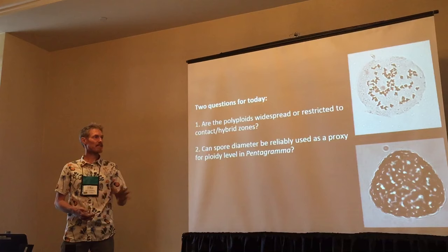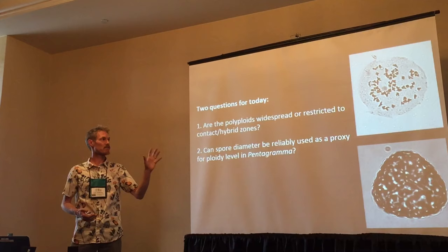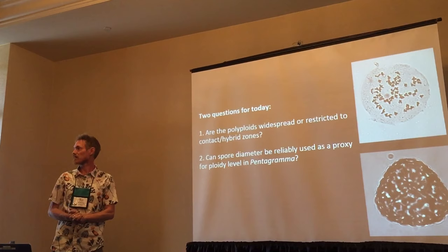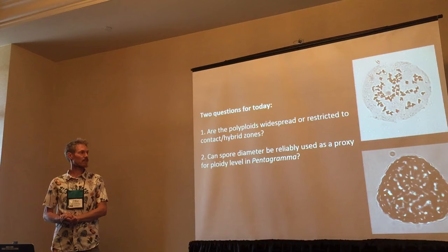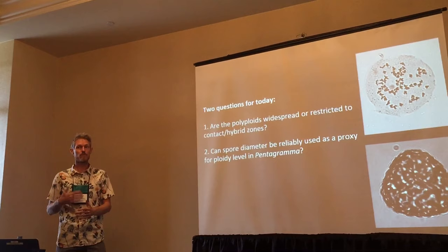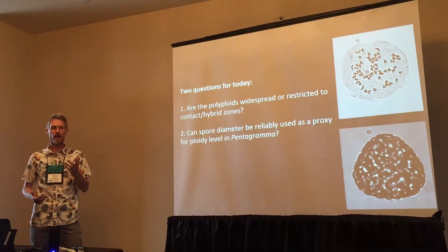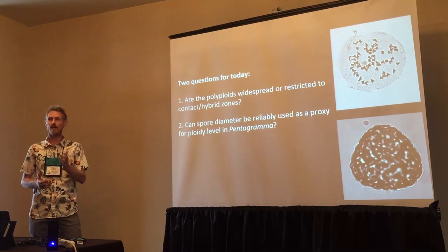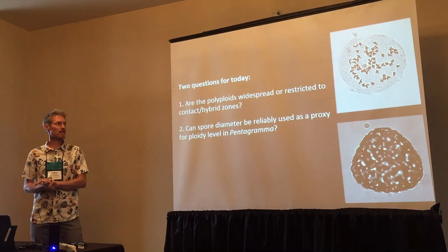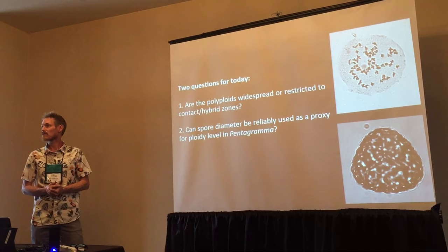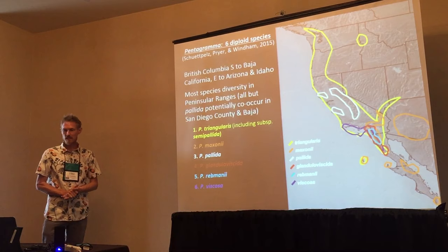Today I'm just addressing two questions. First, looking at the distribution of polyploids across space — specifically, are they widespread or are they restricted to these contact zones of the different diploids? And second, can spore diameter be reliably used as a proxy for genome size and hence ploidy level in Pentagramma? We have some evidence that this is a good proxy in some taxa — Dave Barrington's work showed that in 1986 — but we know it's not reliable in other taxa, so I want to get at this for Pentagramma.